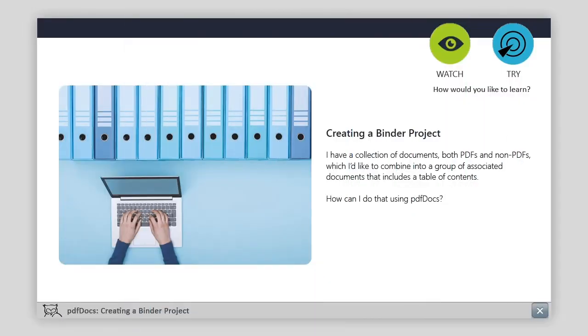I have a collection of documents, both PDFs and non-PDFs, which I'd like to combine into a group of associated documents that includes a table of contents. How can I do that using PDF Docs?